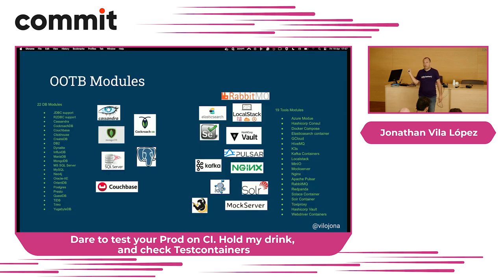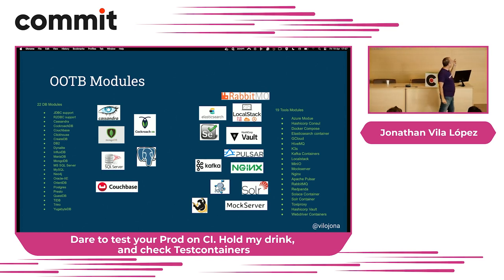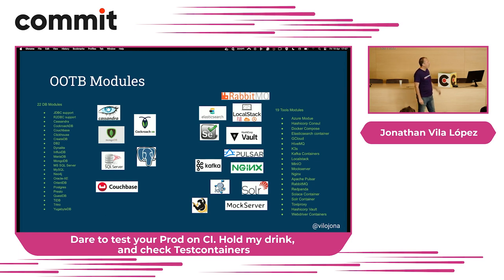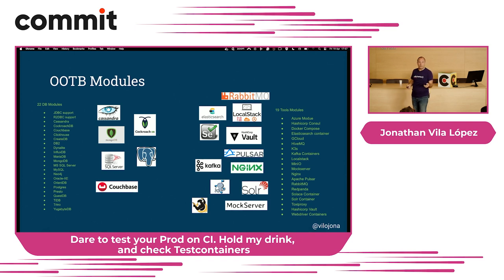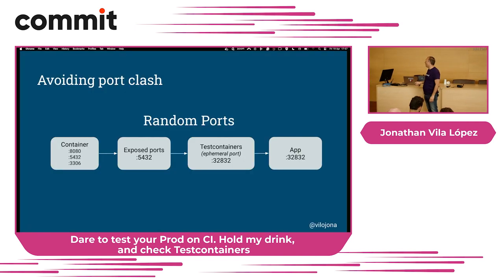These are the out-of-the-box modules — it serves lots of things: databases, HTTP servers, reverse proxies. At this point there were 22 DB modules and more than 19 tools modules. Test containers gives you out-of-the-box pre-built modules that are very easy to run.